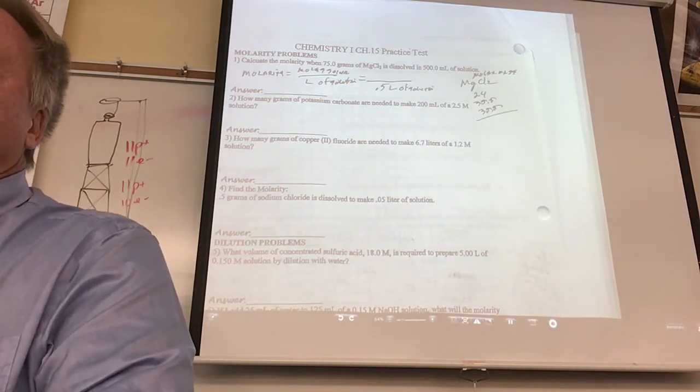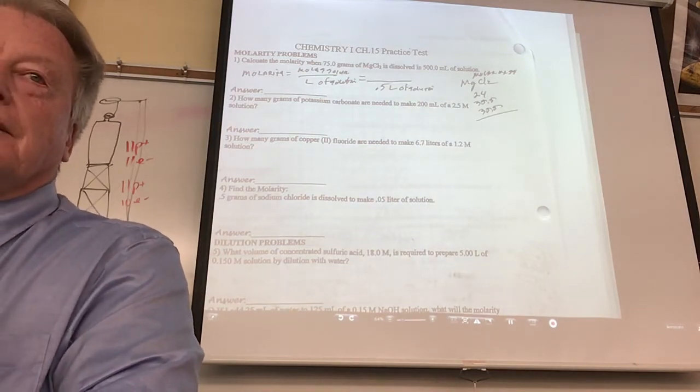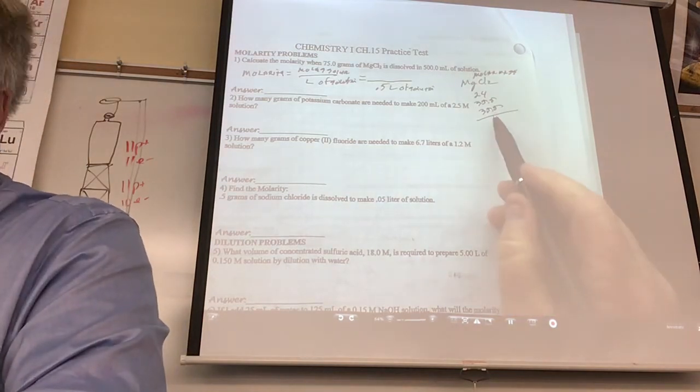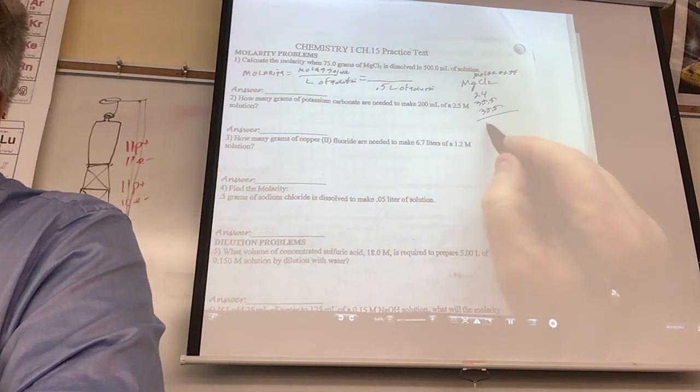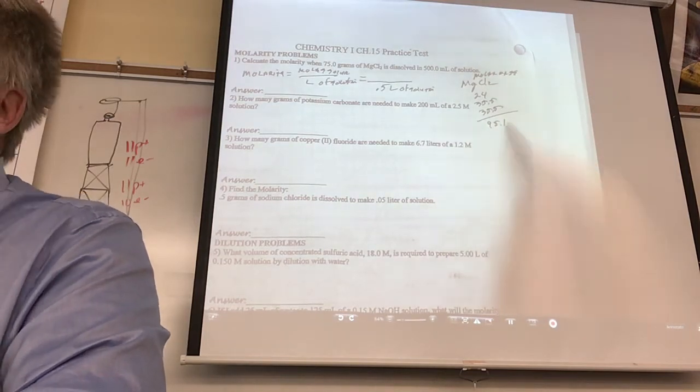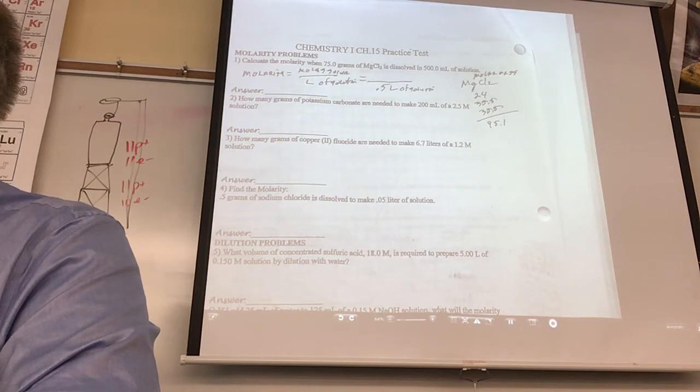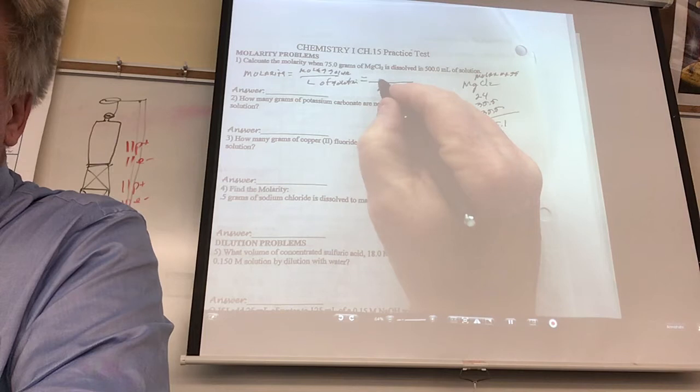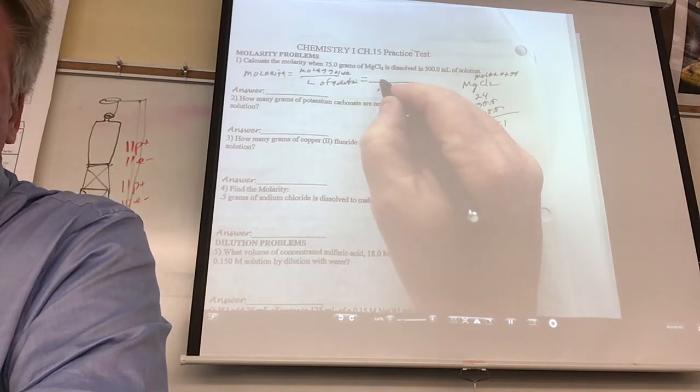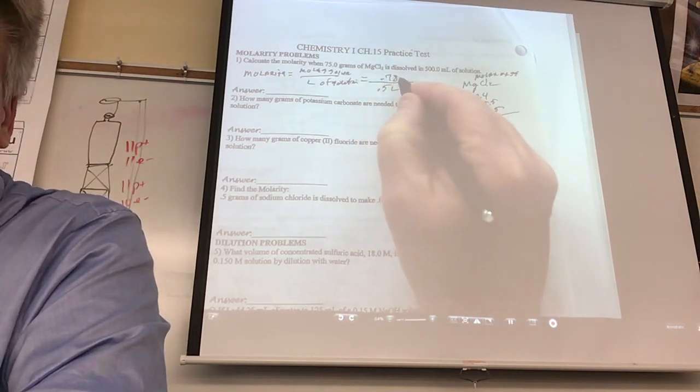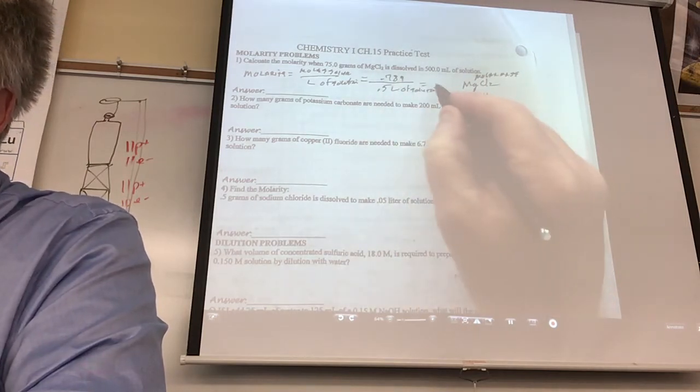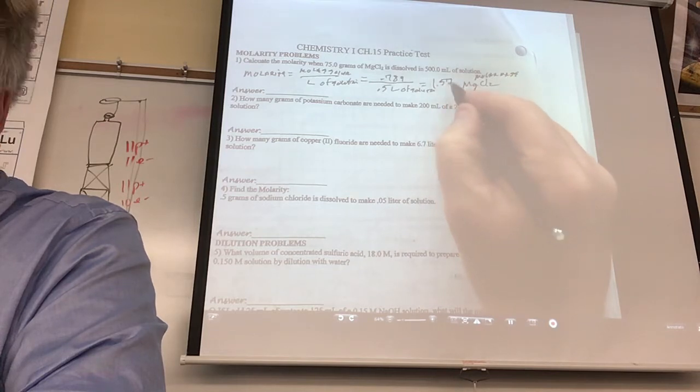All right, who's done? Raise your hand if you're done. Wow, that's good. Now, since you're the first one done, can you tell me what did you get for the molar mass of MgCl2? 95.1. Did everybody else get 95.1? Yeah. Okay, now, when you took 75 divided by 95.1, how many moles did you get? 0.789. Okay, then we need to divide these. What was your final answer? 1.578.